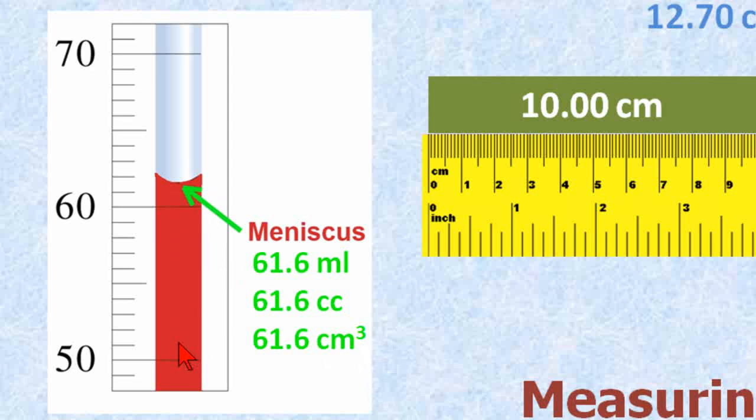This graduated cylinder is full of a red liquid, and we measure it at the meniscus here, which is the bottom of the curve. Meniscus is just simply Greek for curve.